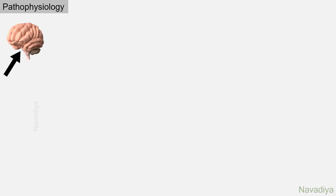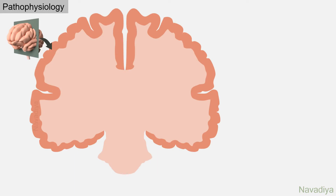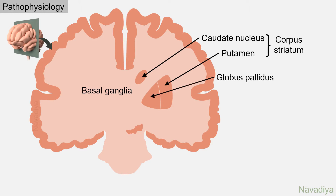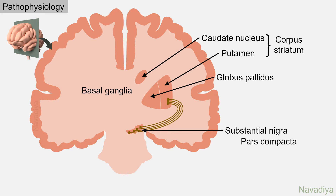Let's start with pathophysiology. This is a brain. If you take its coronal section, it will look something like this. Here we want to focus on structures of the basal ganglia. It has caudate nucleus and putamen. Together they comprise the corpus striatum. Then we have globus pallidus and substantia nigra in the midbrain. Now some neurons from substantia nigra pars compacta go to the corpus striatum — they are called the nigrostriatal pathway. These neurons are dopaminergic.